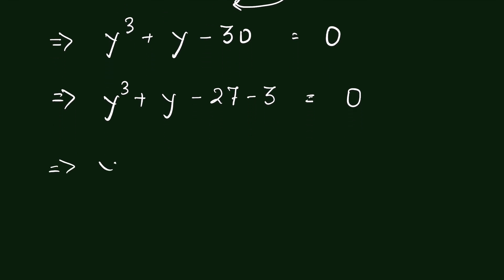Now let's rearrange it, we can write y cube minus 27 plus y minus 3 is equal to 0.